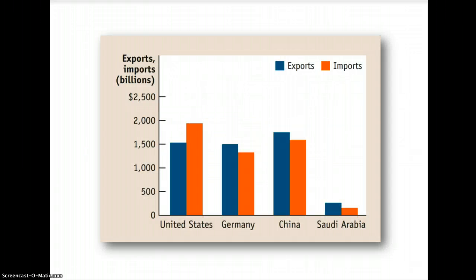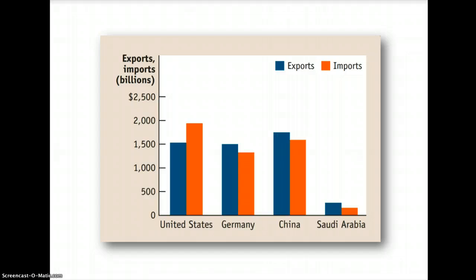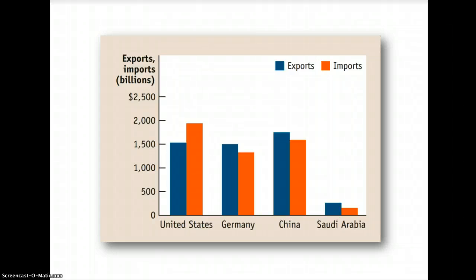This chart shows trade imbalances in 2010 for the United States, Germany, China, and Saudi Arabia. The US has a trade deficit since imports are greater than exports. Germany, China, and Saudi Arabia all have trade surpluses since exports are greater than imports.